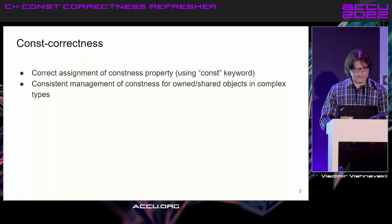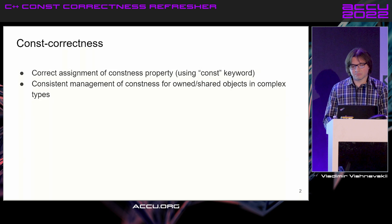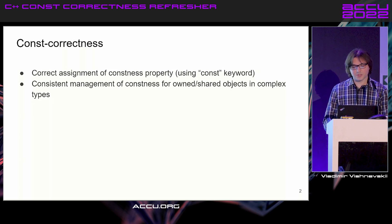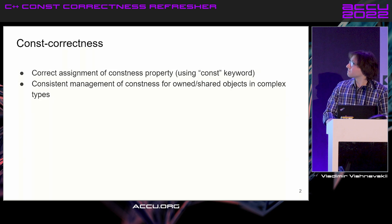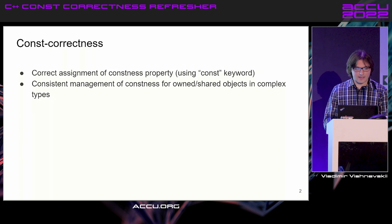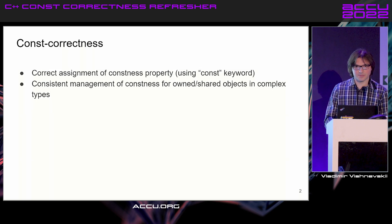So what is const correctness? There isn't a very strict definition, but generally it is the correct assignment of a constness property, normally using the const keyword. This can also be extended to mean consistent management of constness for owned and shared objects in complex types.